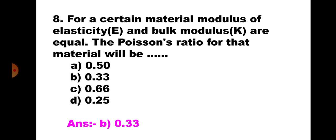Question number 8. For a certain material, modulus of elasticity E and bulk modulus K are equal. The Poisson's ratio for that material will be: A. 0.5, B. 0.33, C. 0.66, D. 0.25. Writing the relation E = 3K(1 − 2μ) and setting E = K, you get μ = 0.33. Hence, the correct answer is B: 0.33.